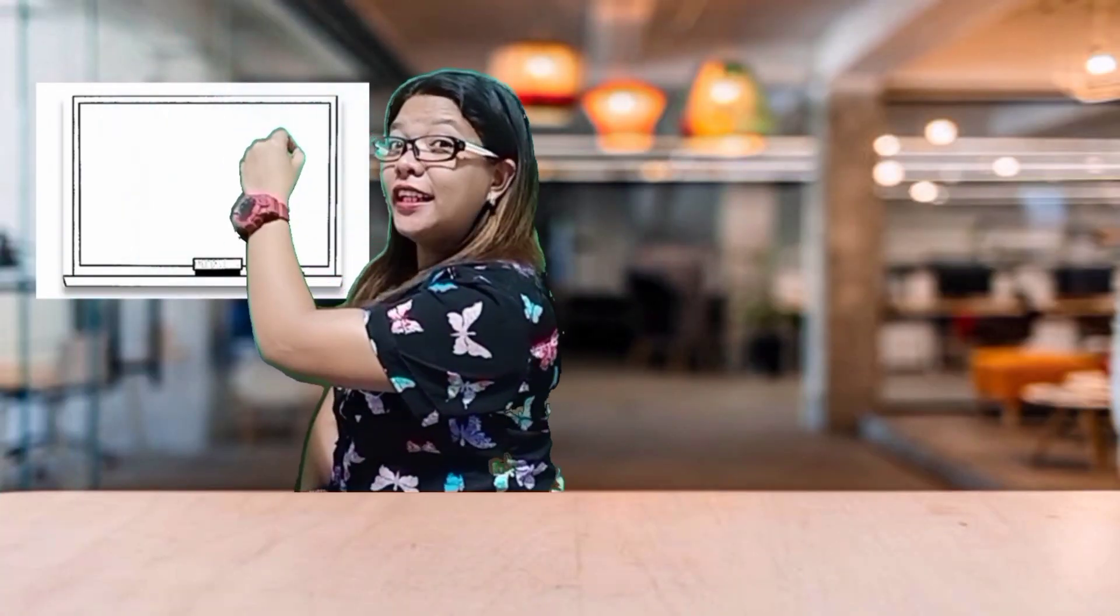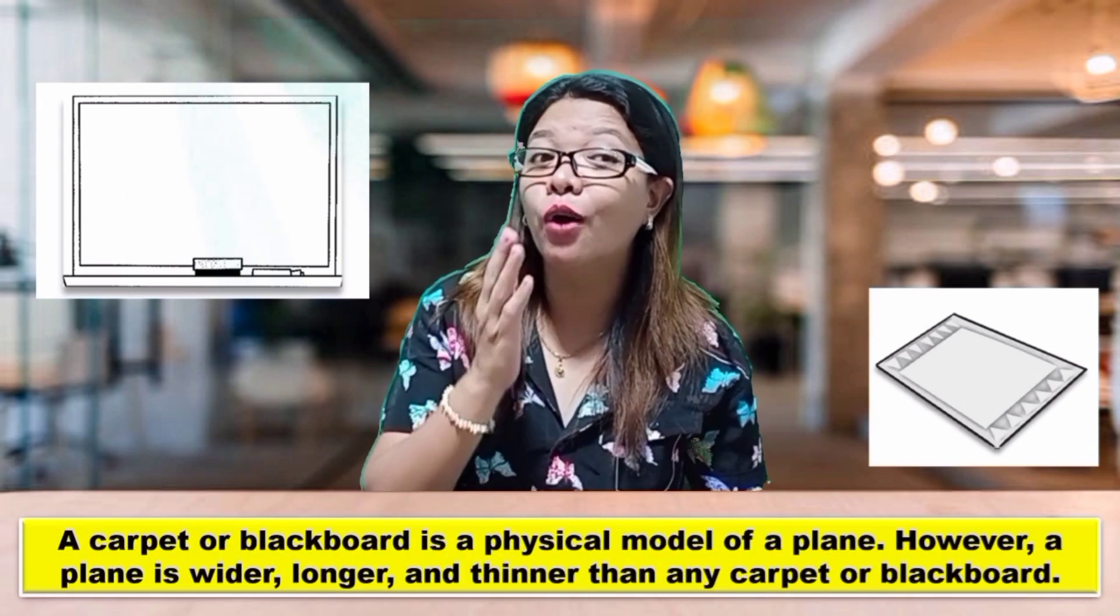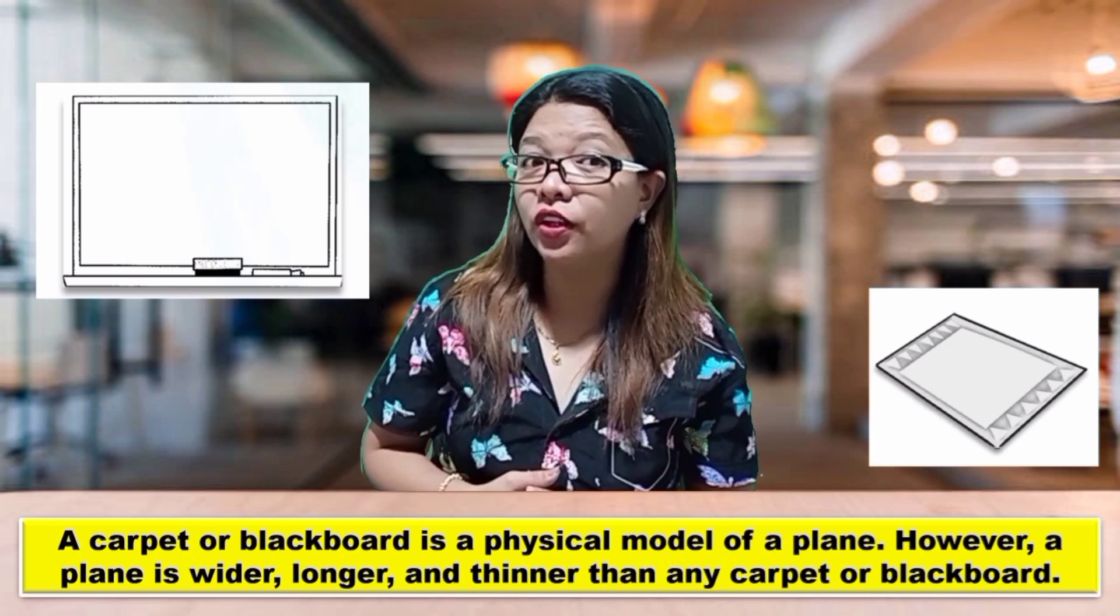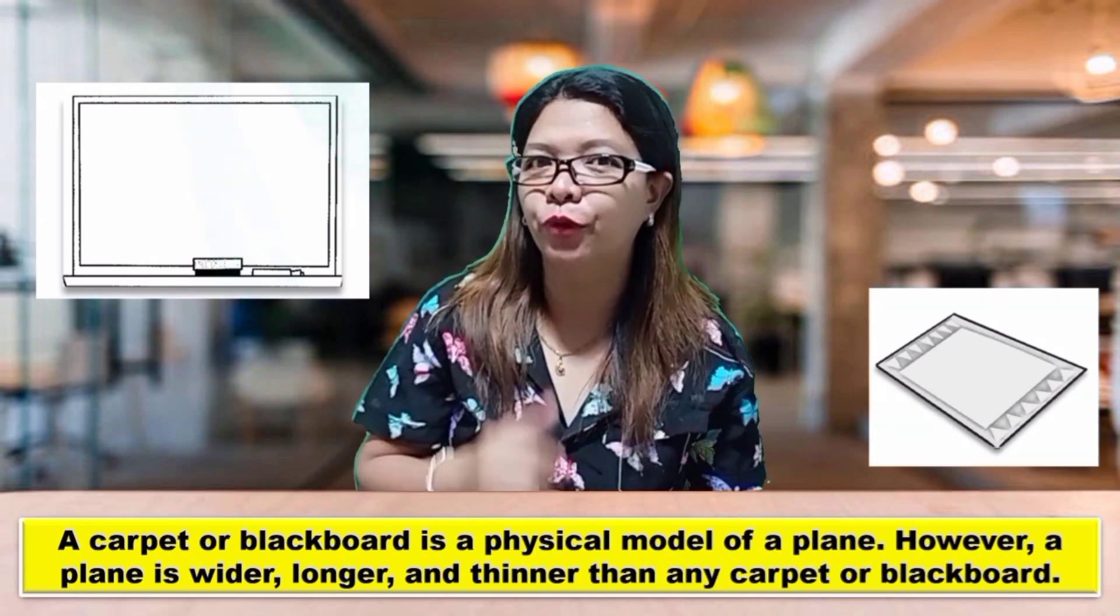I'm writing on a blackboard. Here is an example of a carpet. A carpet or a blackboard is a physical model of plane. However, a plane is wider, longer, and thinner than any carpet or blackboard.